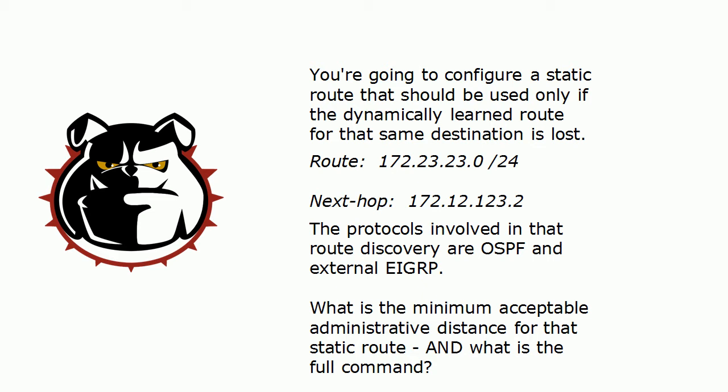You're going to configure a static route that should be used only if the dynamically learned route for that same destination is lost. The protocols involved in route discovery in this question are two: OSPF and external EIGRP. What is the minimum acceptable admin distance for this static route, and what is the full command?